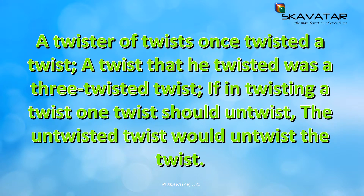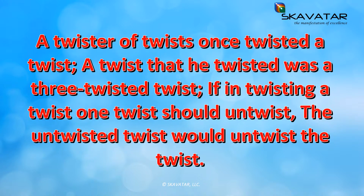A twister of twists once twisted a twist; a twist that he twisted was a three-twisted twist. If in twisting a twist one twist should untwist, the untwisted twist would untwist the twist. A twister of twists once twisted a twist; a twist that he twisted was a three-twisted twist. If in twisting a twist one twist should untwist, the untwisted twist would untwist the twist.